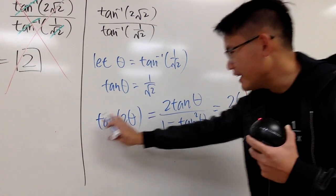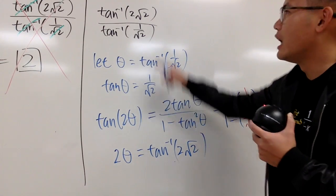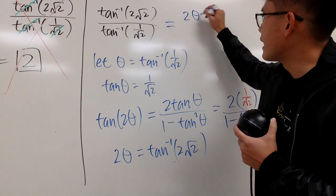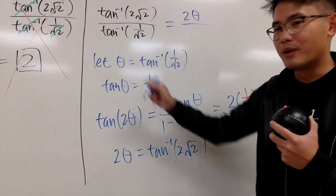In another word, I can take the inverse tangent on both sides, and I get, so, as you can see, on the top here, this right here is just 2θ. And, on the bottom, this right here is just our angle θ.